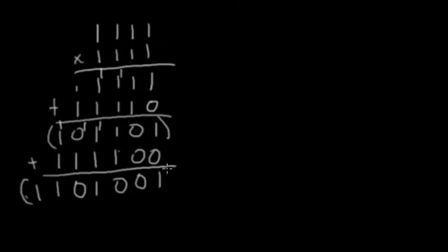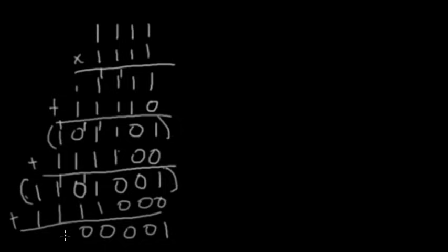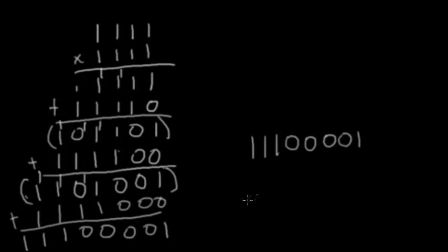Now we do the last place value — fill in three zeros and then 1 times 1 is 1, 1 times 1 is 1, 1 times 1 is 1, 1 times 1 is 1. Adding this up for the final answer: 1, 0, 0, 0, 0, 0 carry the 1, then 0 carry the 1, then 3 carry the 1, then 2, then 3, then 1 and 1. Final result: 11100001.